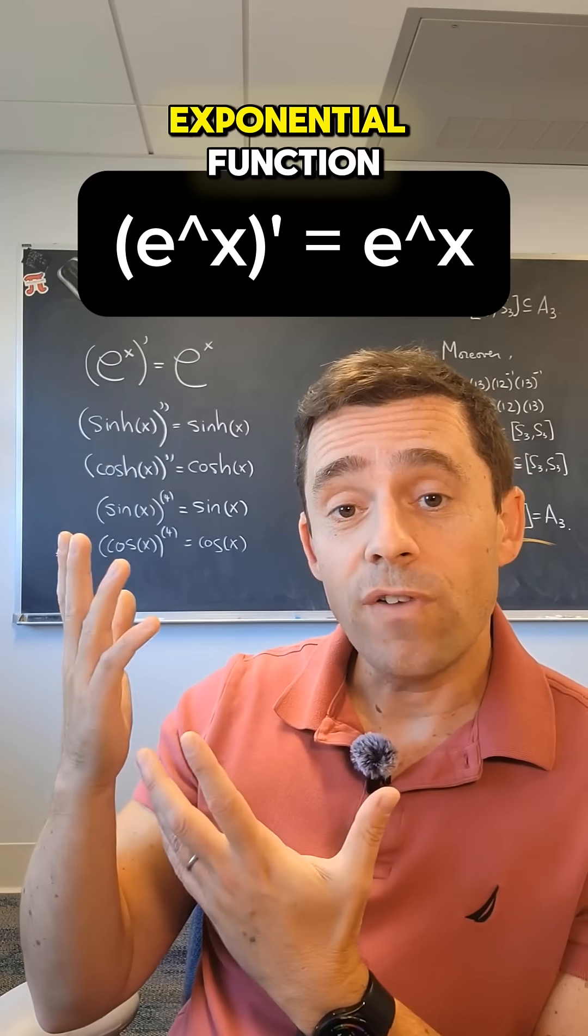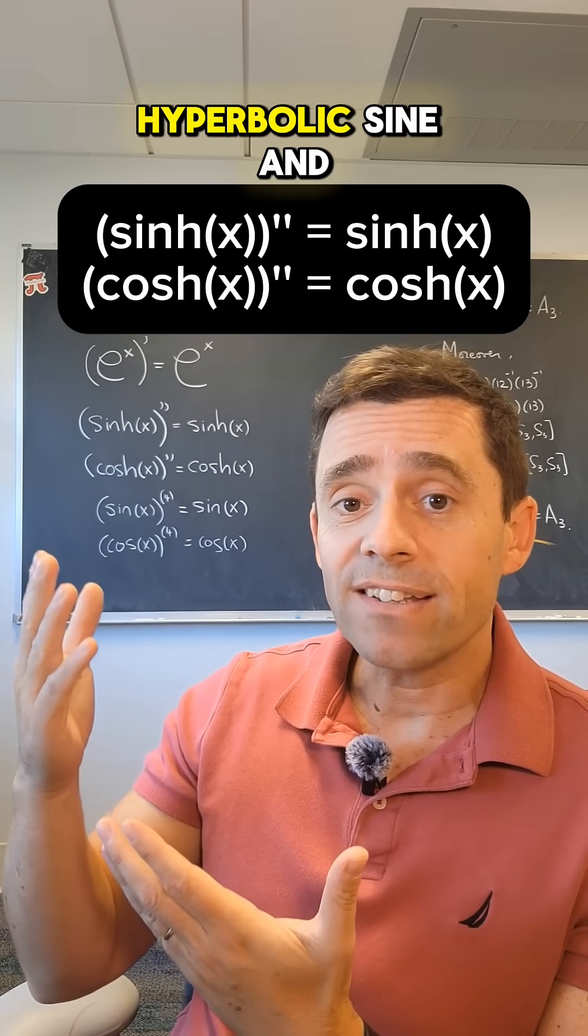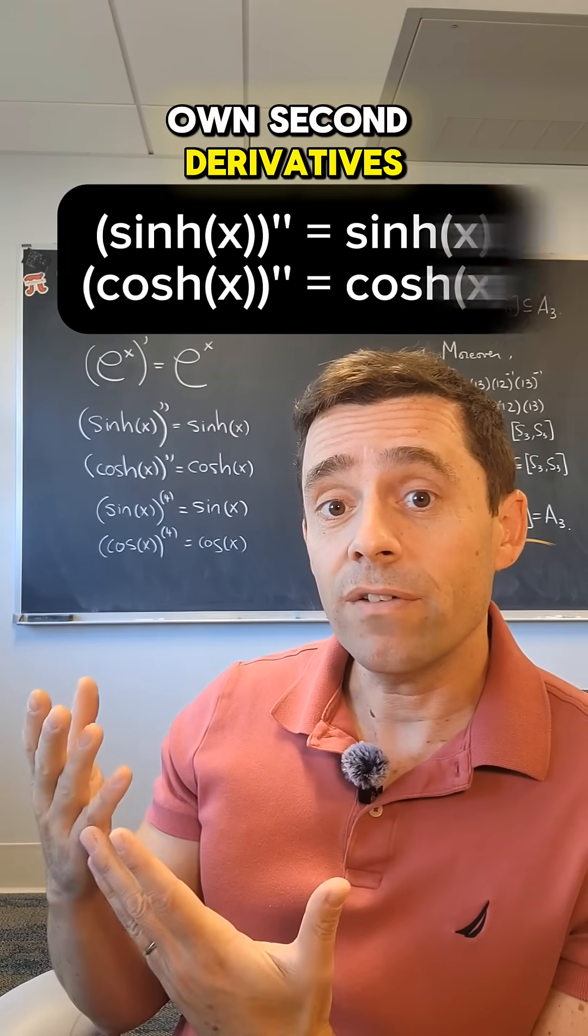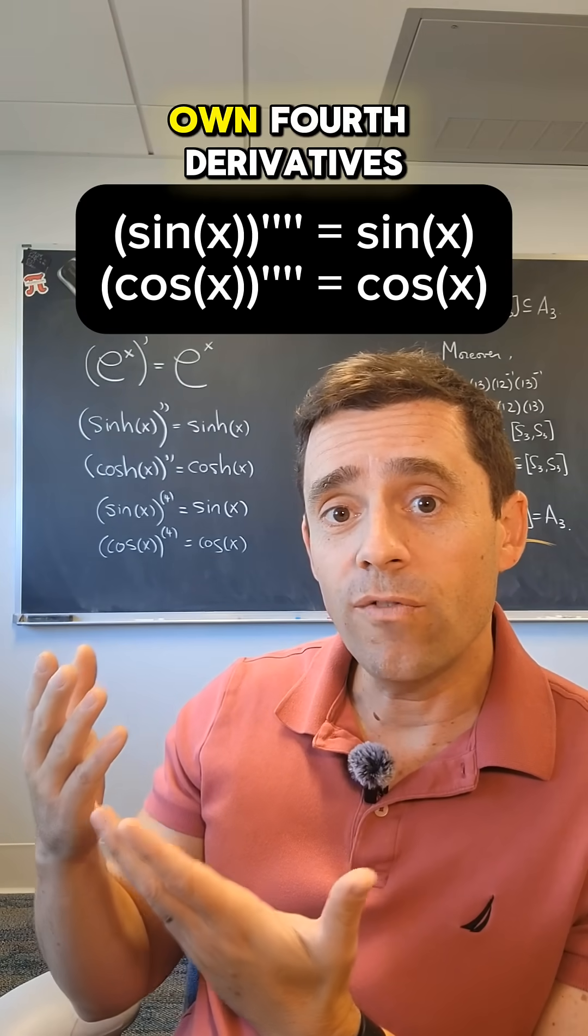We have the exponential function, which is its own derivative. We have the hyperbolic sine and hyperbolic cosine. They are their own second derivatives. And we have sine and cosine. They are their own fourth derivatives.